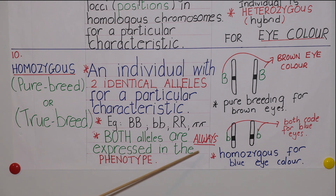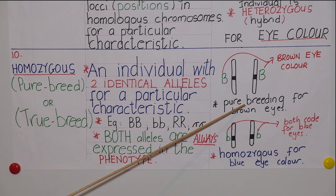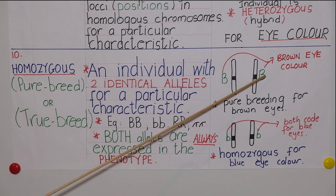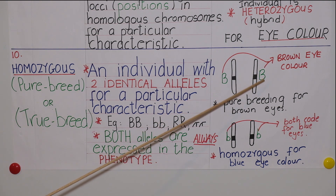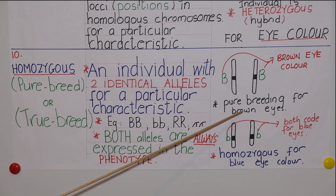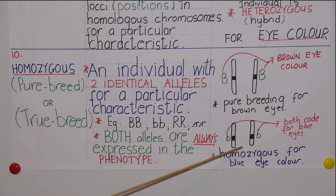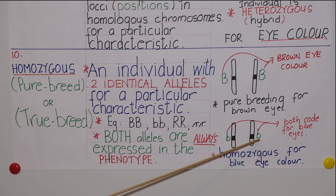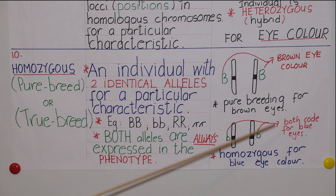Since both alleles are in combination with each other and both alleles are identical, they are always expressed in the phenotype — in other words, the external, outward, physical appearance of the individual. This individual would be pure breeding, dominant for brown eye colour. This other individual would be homozygous recessive, since the alleles coding for blue eye colour are recessive to those coding for brown eye colour.